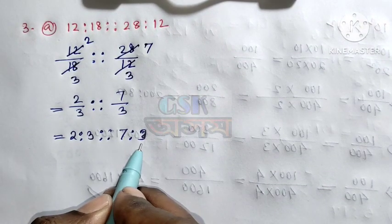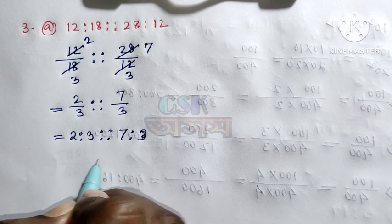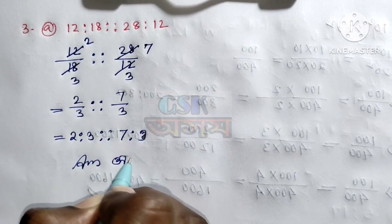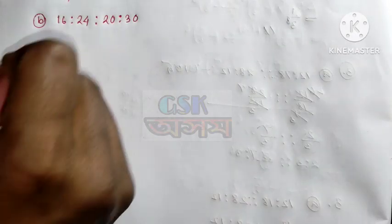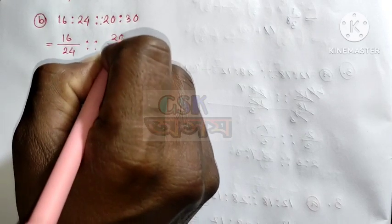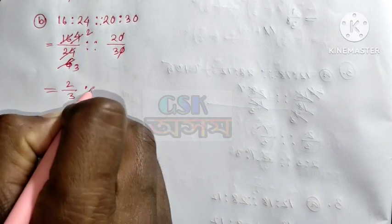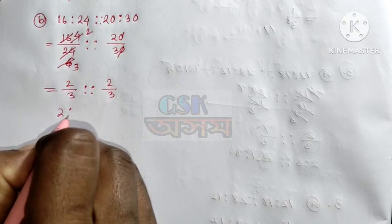This is 12 to 18, which is 12 to 18, which is 12 to 18. We use 2 to 3.